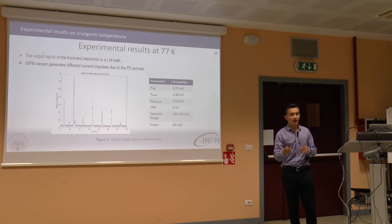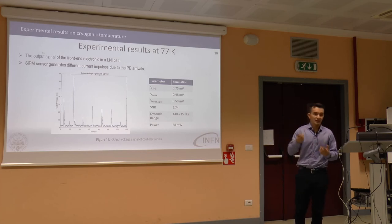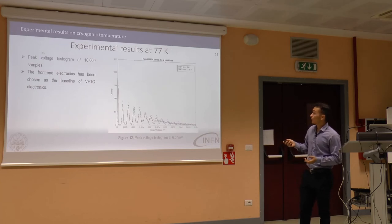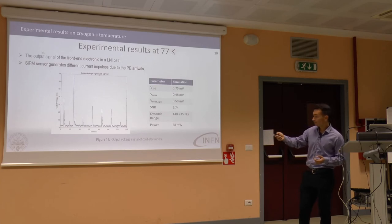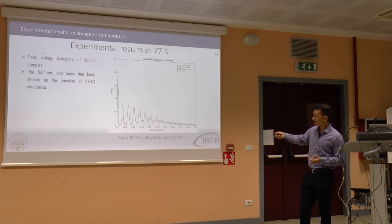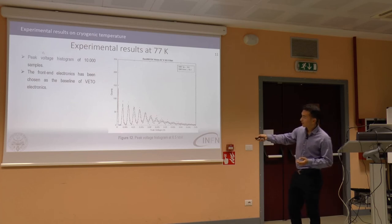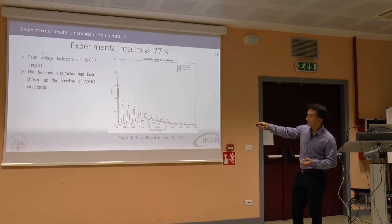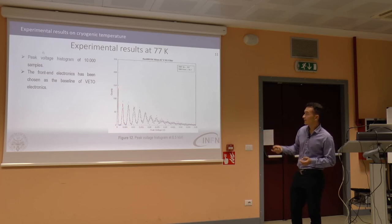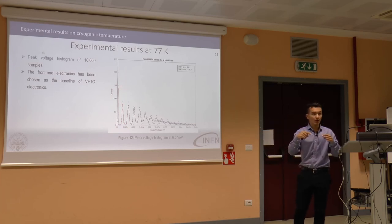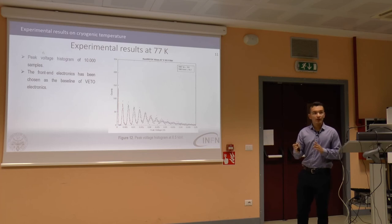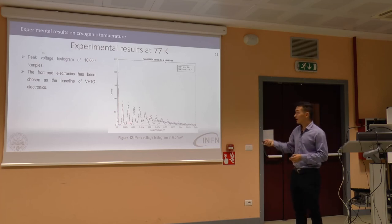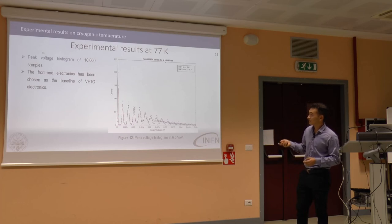If we increase the bias of the sensor, we get a higher gain and larger amplitude for one photoelectron. Here is a peak-voltage histogram obtained from the data acquisition with 1,000 samples. The first photoelectron peak is well separated from the baseline peak, which guarantees that the baseline is not confused with a photoelectron arrival — a critical requirement for correct measurement.